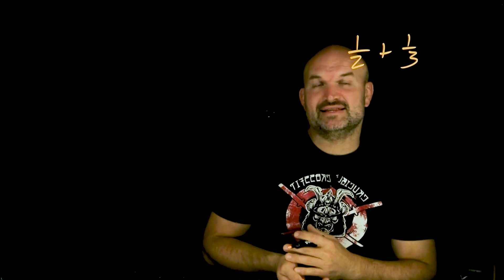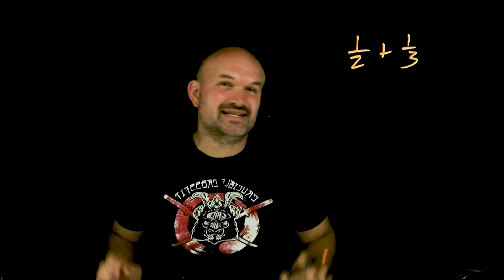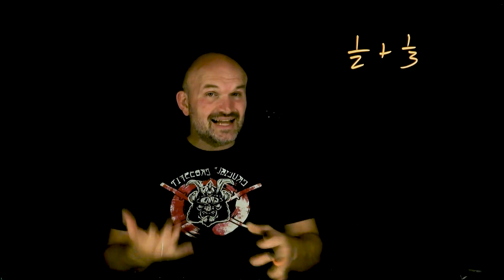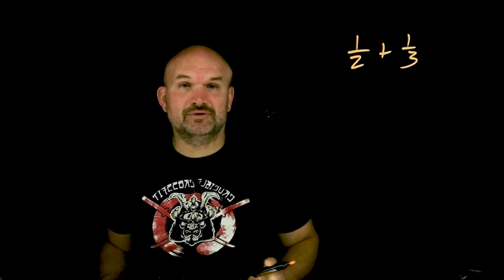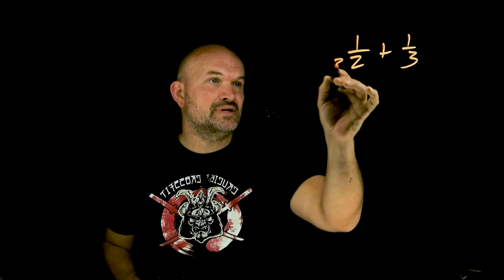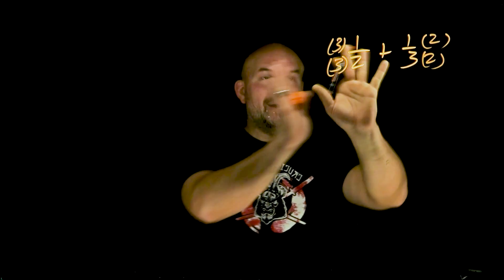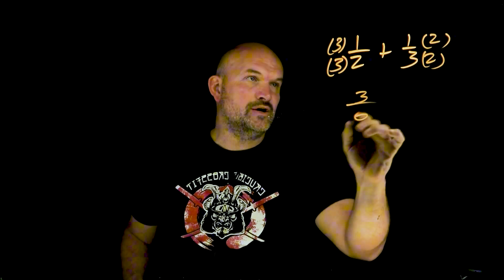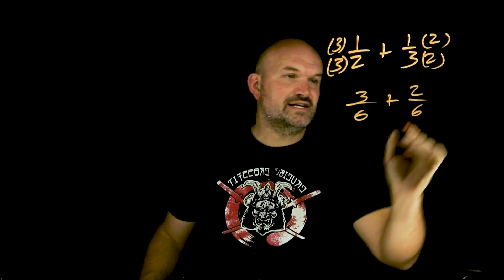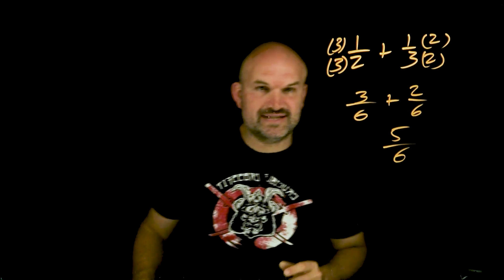On a problem like this you have to understand that the common denominator is going to be six — that's the smallest number that both two and three evenly divide into. One tip is to just multiply the denominators, because that's always going to give you a common denominator, and in this example that is exactly what the least common denominator is. So I'm going to multiply by three on the left-hand side and by two on the right-hand side, rewriting the fractions as three-sixths plus two-sixths, and since the denominators are the same I can add them to get five-sixths.